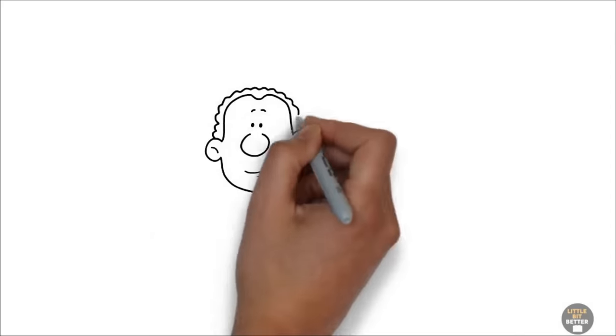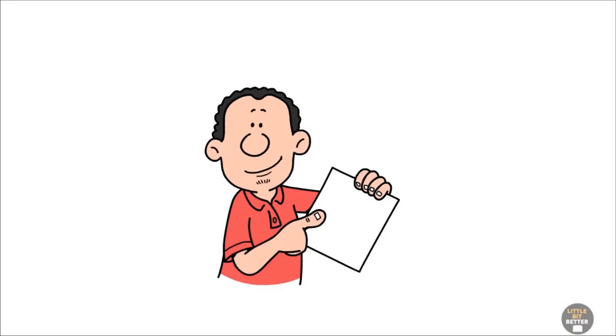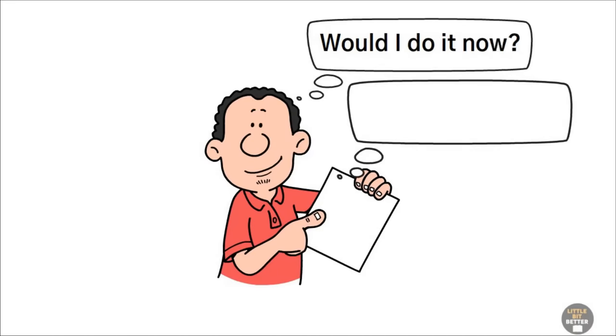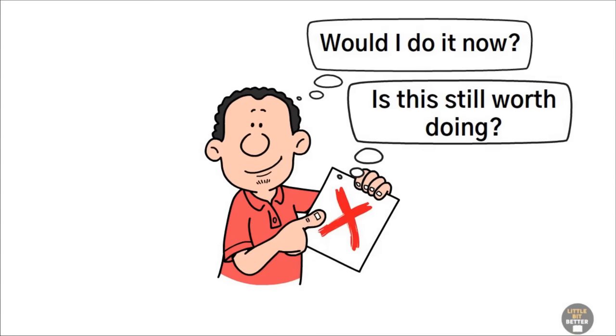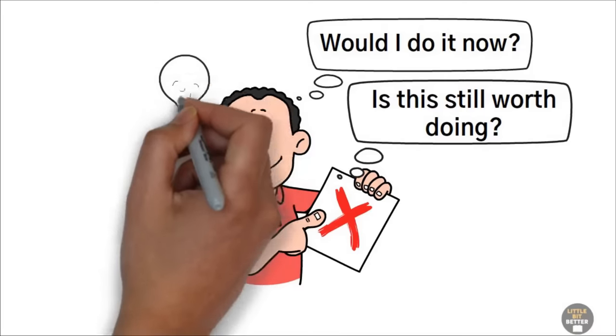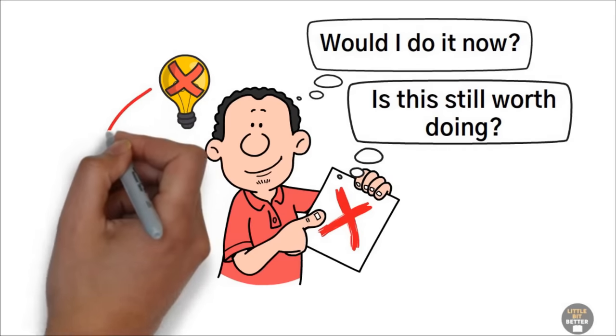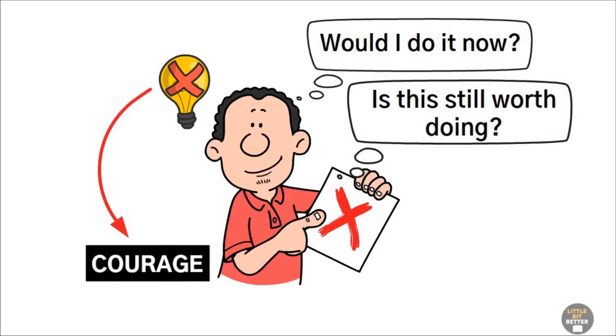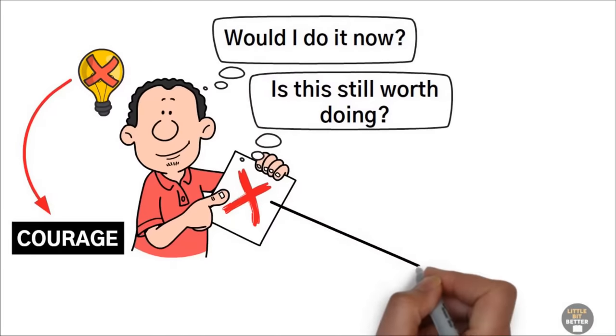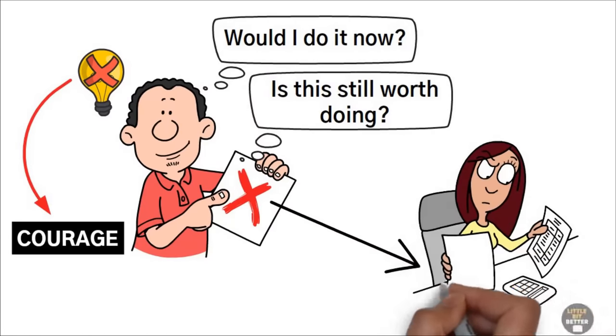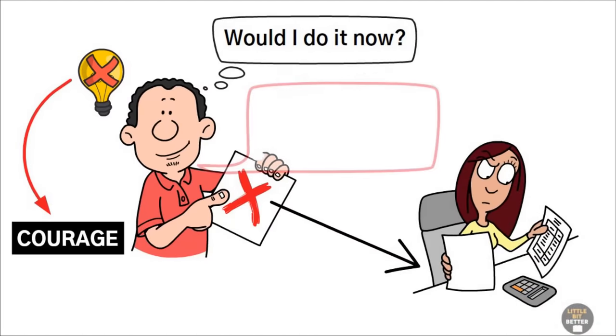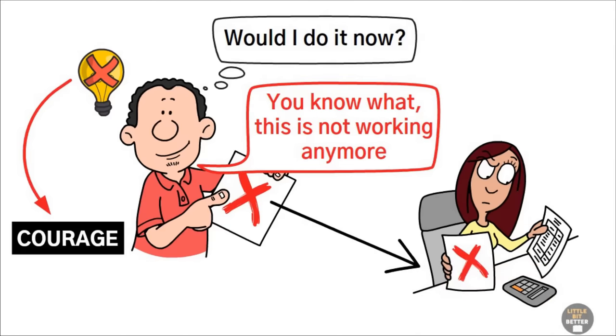Effective people periodically review their work and ask, if I did not already do this, would I do it now? Is this still worth doing? And if it isn't, he gets rid of it. And here's the most important thing about deleting tasks or projects. You don't need intelligence for it. You need courage. The task that is no longer important to you is probably someone else's top priority. So it takes courage to face the other person and say, you know what? This isn't working anymore and we're going to stop doing it.